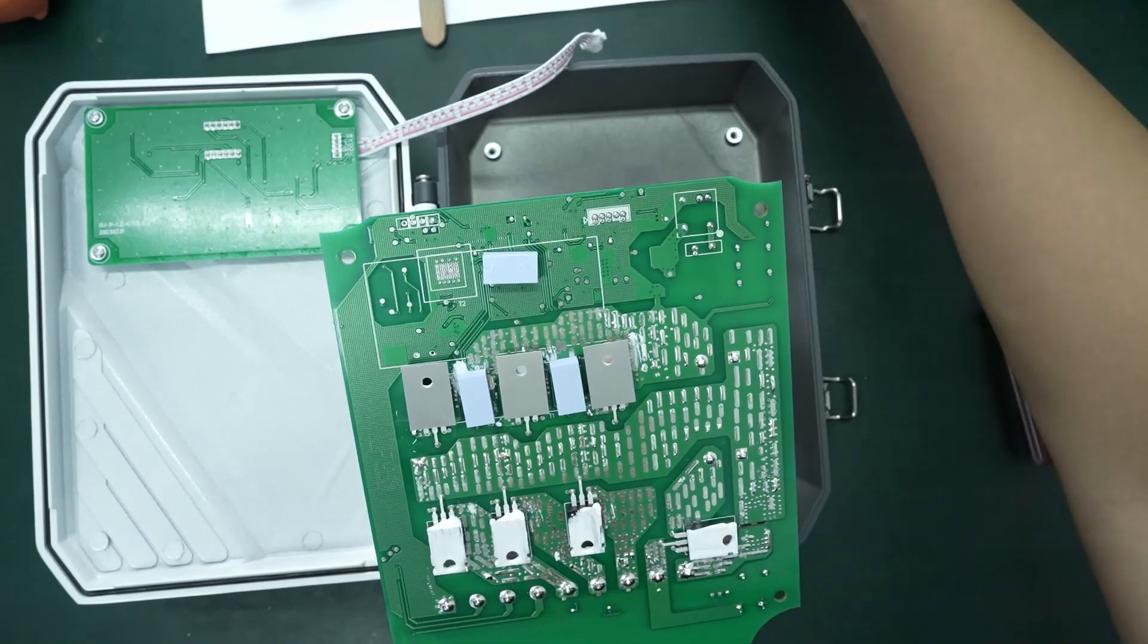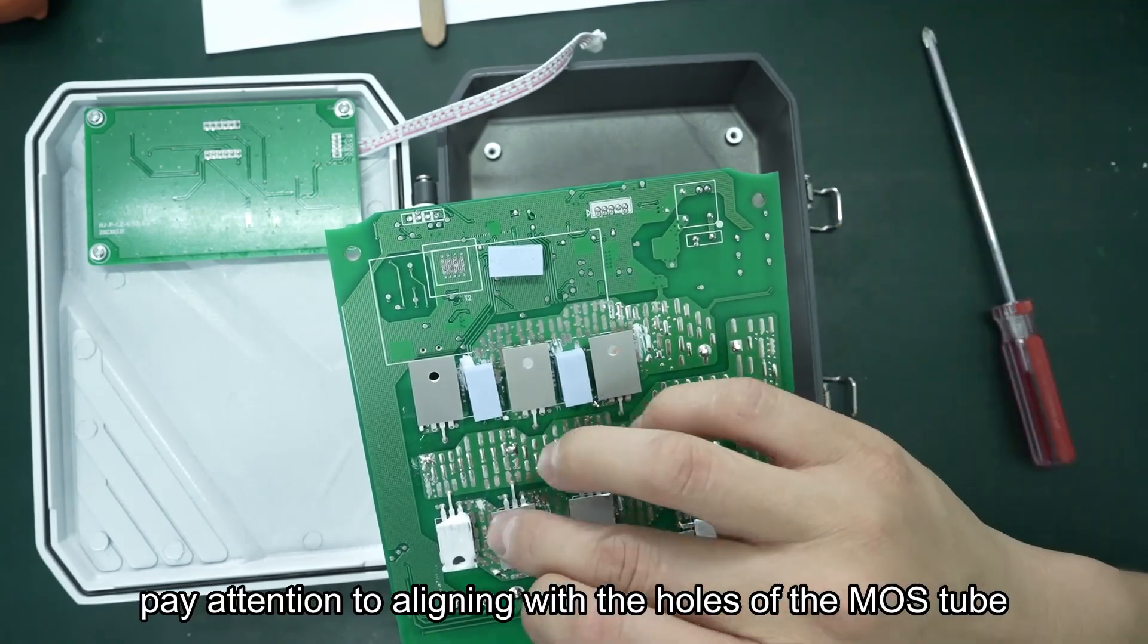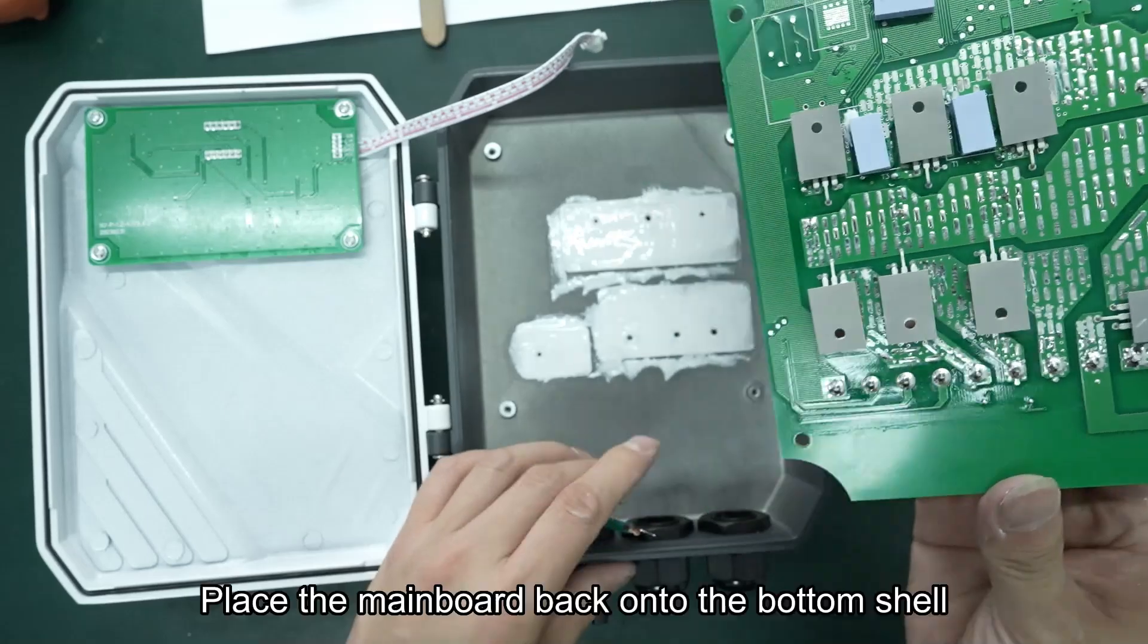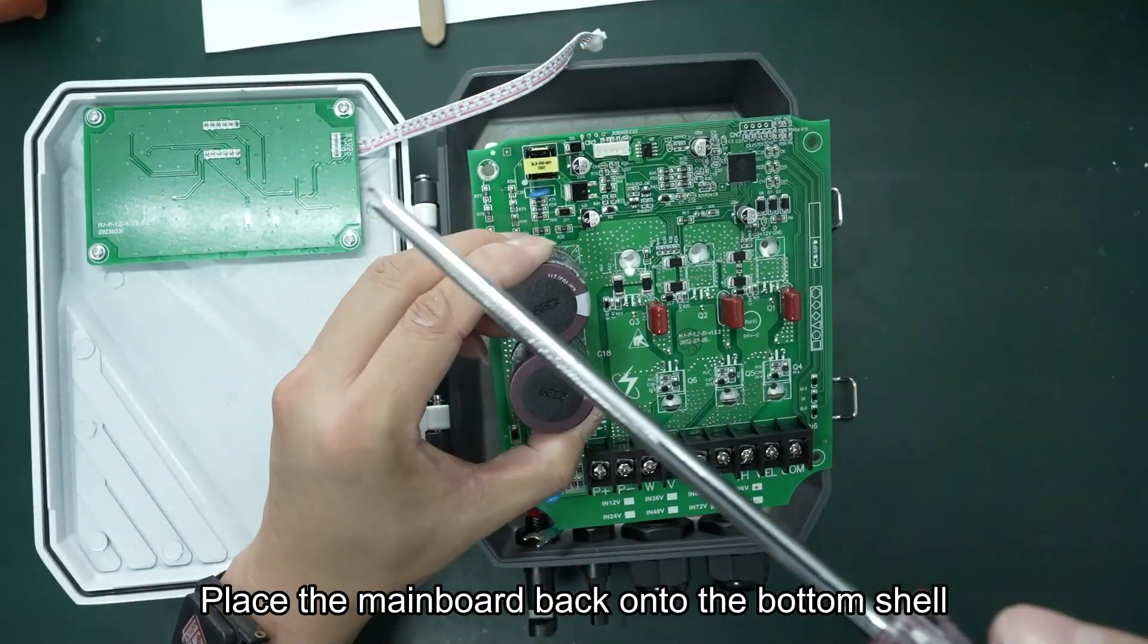During attachment, pay attention to aligning with the holes of the MOSFET, ensuring vertical placement. Place the main board back onto the bottom shell.